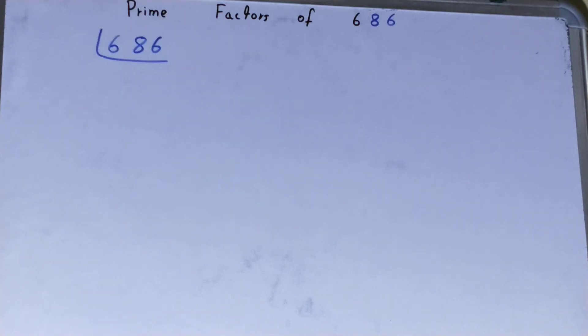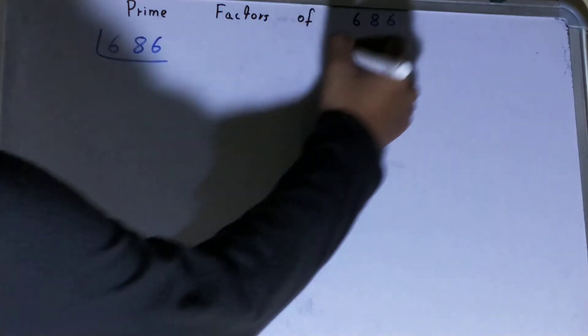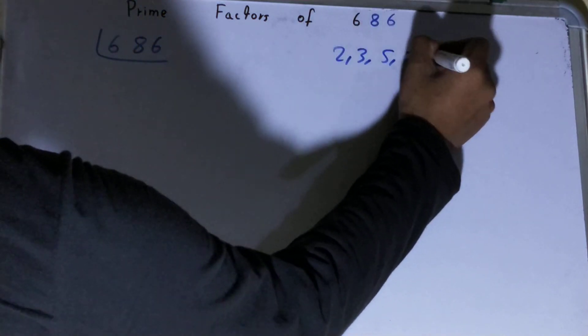Before solving this any further, you must know what prime numbers are. Prime numbers are numbers that are divisible by one and the number itself, like 2, 3, 5, 7, and so on.